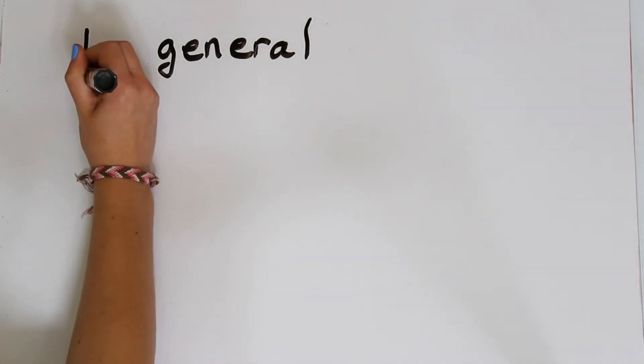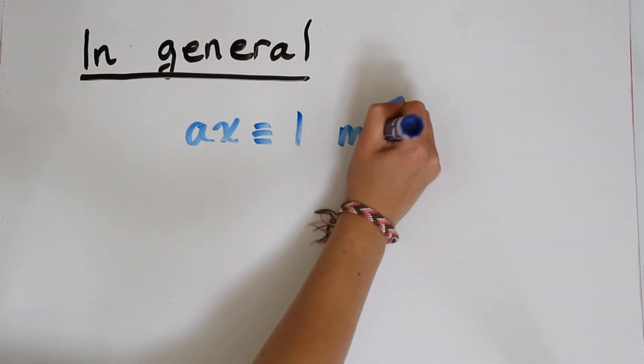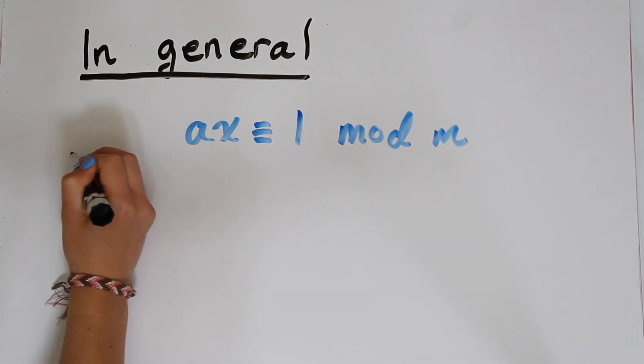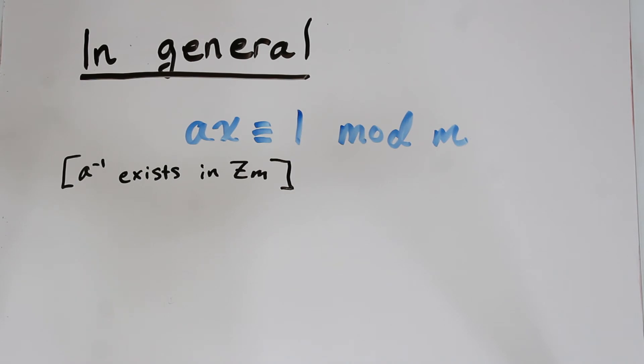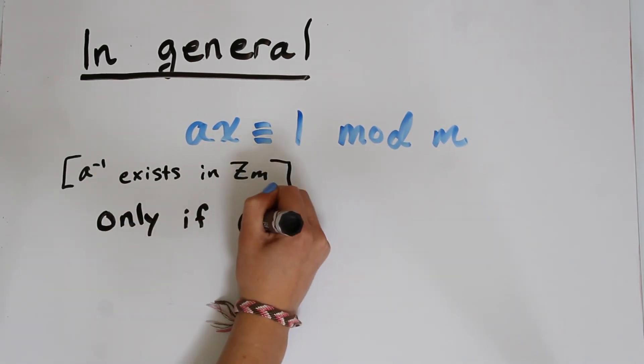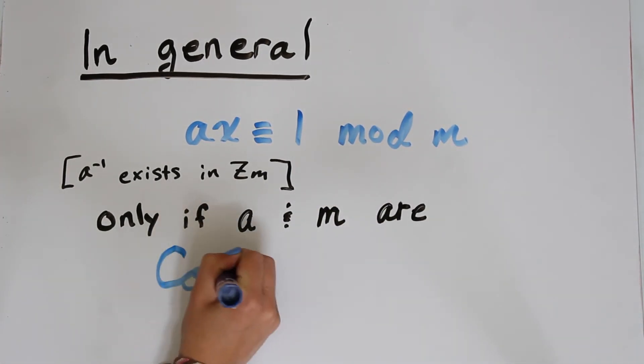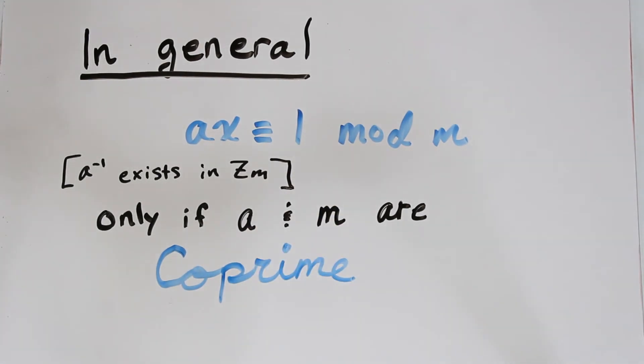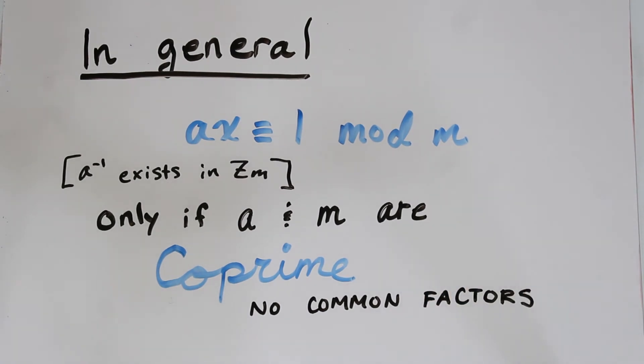So in general, if we're looking for a solution to the congruence ax is congruent to 1 mod m, so we're looking for an inverse of a in zm, a solution only exists if a and m are co-prime. And you may have never heard this word before, but it just means that a and m share no common factors. So a and m don't have to be prime themselves. It's just that their only common factor is 1. So for instance, 4 and 5 are co-prime, even though 4 is not a prime number.